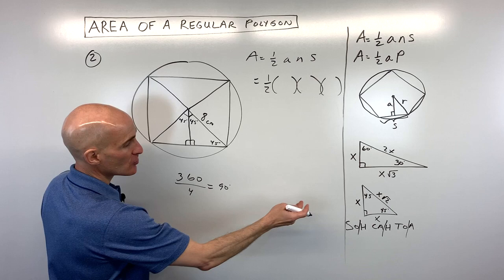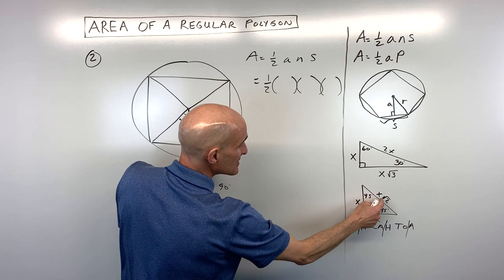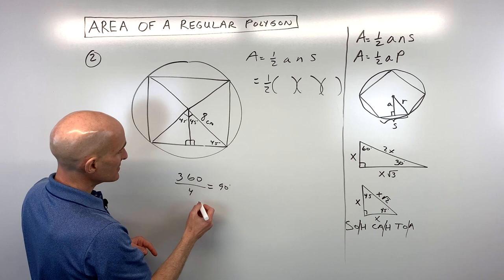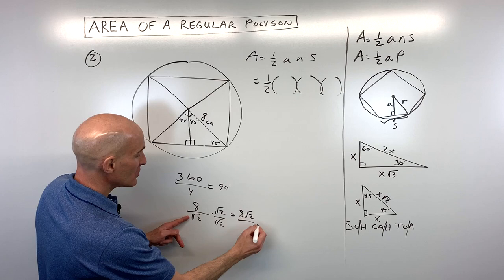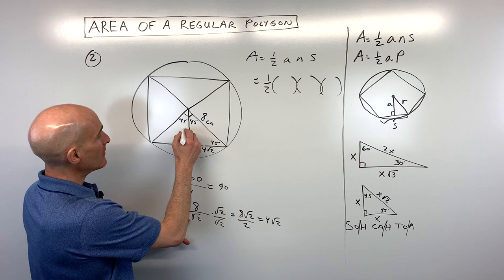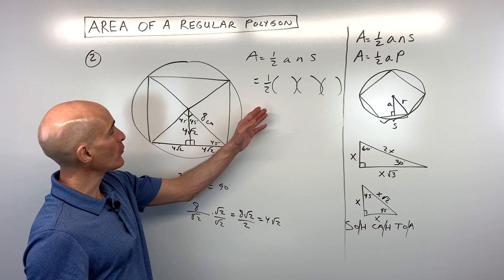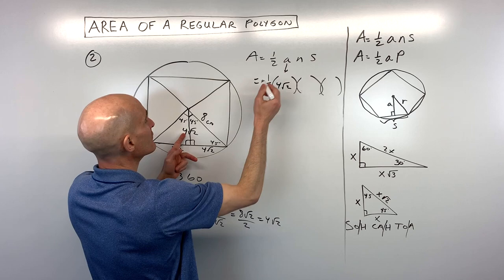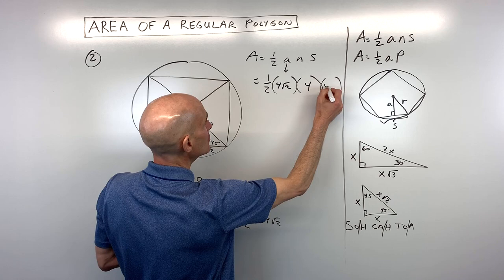To go from the hypotenuse to the leg in a 45-45-90 triangle, we divide by square root of 2. So 8 divided by square root of 2 — rationalizing by multiplying numerator and denominator by square root of 2 — gives 8 square root of 2 over 2, which simplifies to 4 root 2. So the apothem is 4 root 2, and each half of the side is also 4 root 2, making the full side length 8 square root of 2.